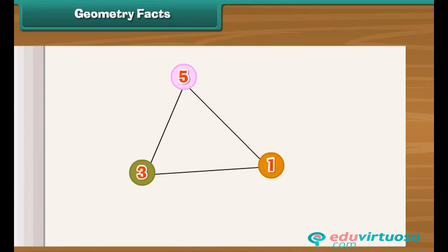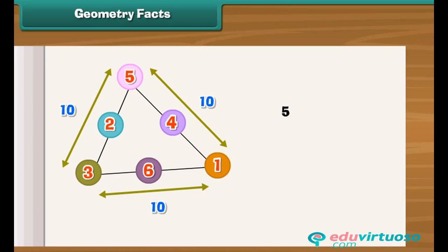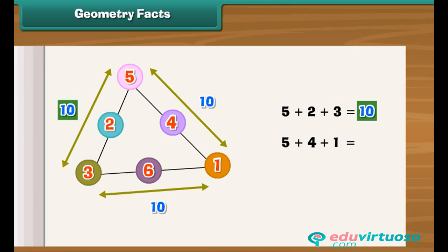Look at this magic triangle. The sum of numbers on each side of the triangle is 10. Let us verify: 5 plus 2 plus 3 is equal to 10; 5 plus 4 plus 1 is equal to 10; 3 plus 6 plus 1 is equal to 10.